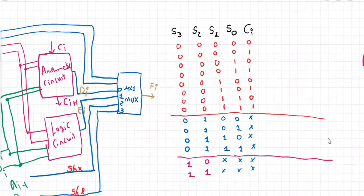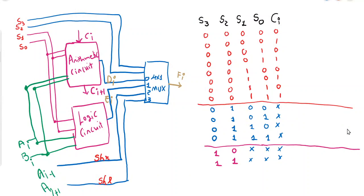This is how the arithmetic logic shift circuit looks. The circuit is divided into two parts. On the left side we have two circuits: the arithmetic circuit and the logic circuit. Individual bits of the input variables or registers, ai and bi, are given as inputs to both circuits. The arithmetic circuit performs arithmetic micro-operations and the logic circuit performs logic micro-operations, while the last two inputs are used for shift operations.